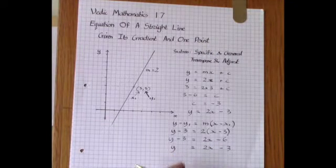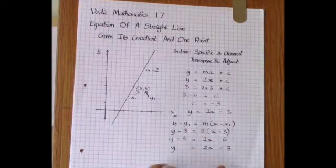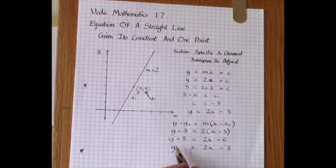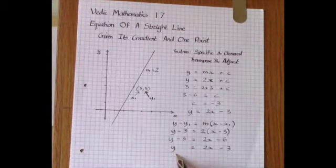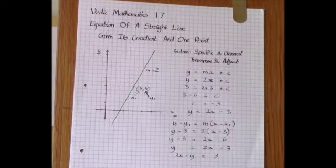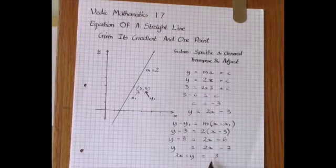Alternatively we can move the x and the y, get the x and the y terms on the same side and the independent term by itself, and the equation would then be 2x minus y is equal to 3 after all the transpositions have been done.